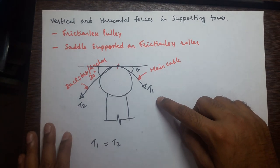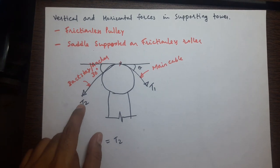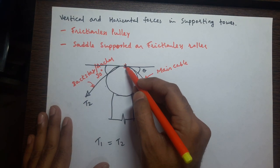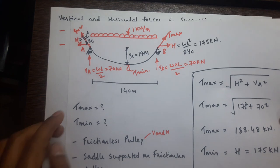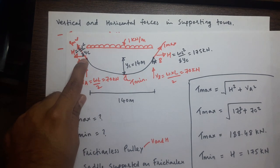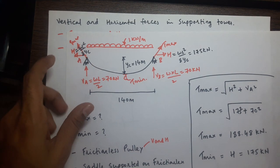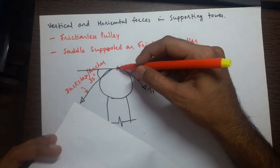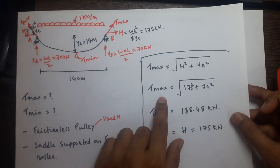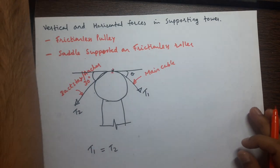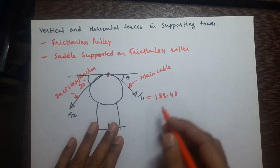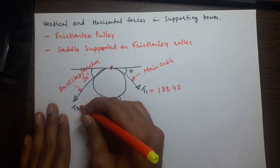T1 is the tension at the support of the main cable, which equals T_max = 188.48 kilonewtons. Since this is a frictionless pulley, T1 equals T2, so tension in the backstay is also 188.48 kilonewtons.